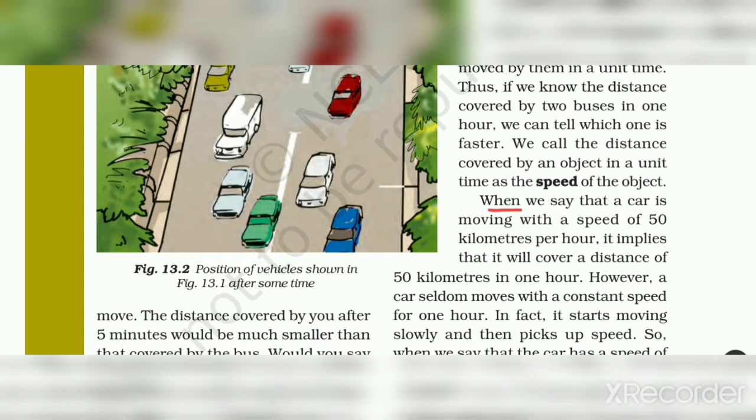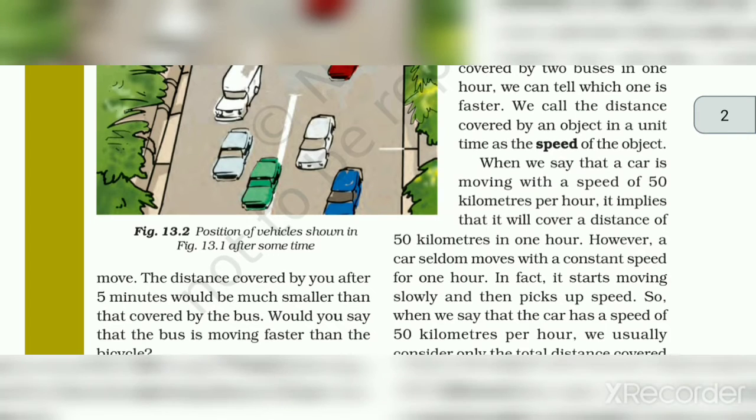When we say that a car is moving with a speed of 50 km per hour, it implies that it will cover a distance of 50 km in one hour. To hum yeh keh sakte hai ki car jo hai wo ek hour mein 50 km ka distance cover karti hai.